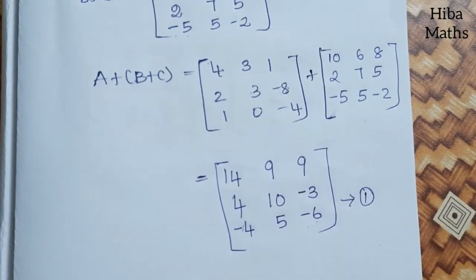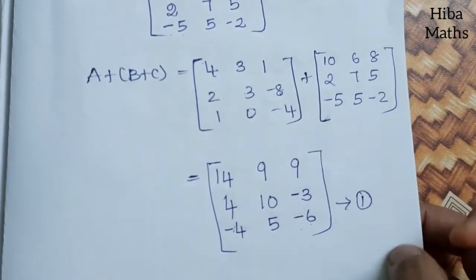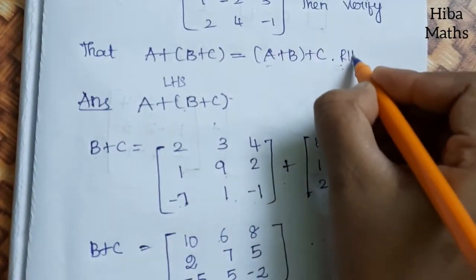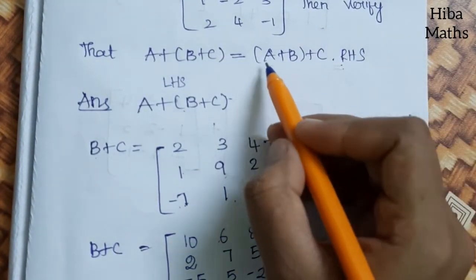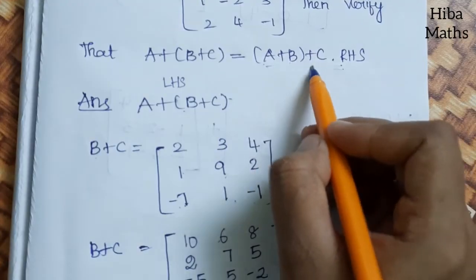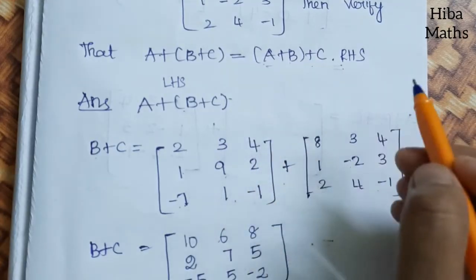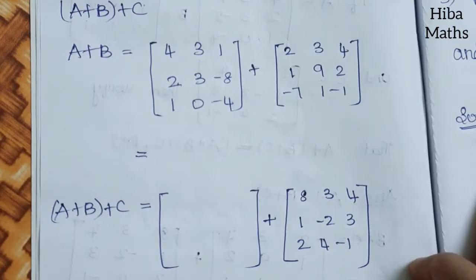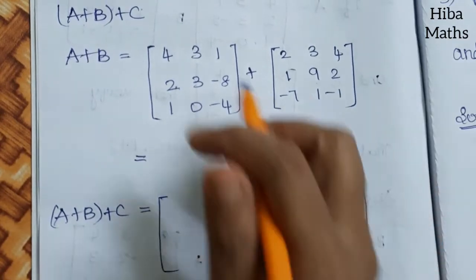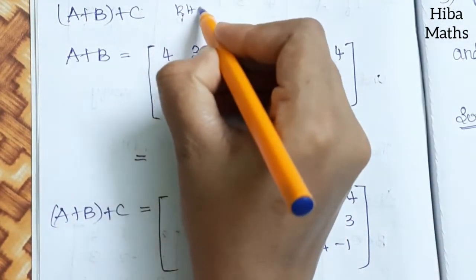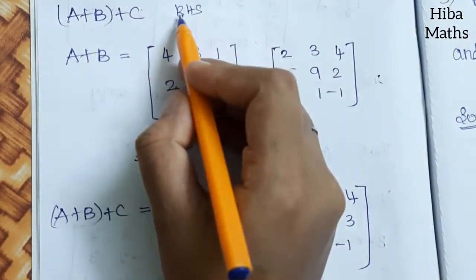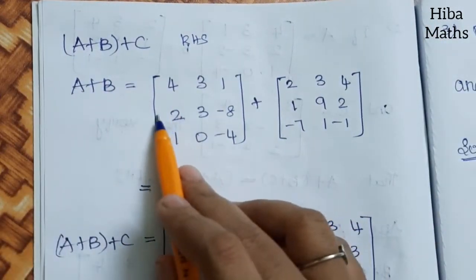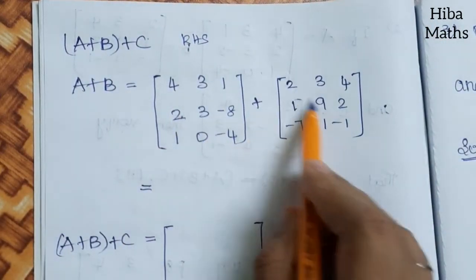This is result 1. Now RHS — right hand side. For RHS, we first compute A + B, then add C to it. Let us compute A + B: matrix A is [4,3,1; 2,3,-8; 1,0,-4] and matrix B is [2,3,4; 1,9,2; -7,1,-1].